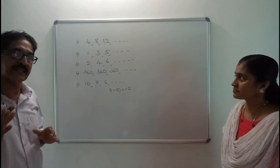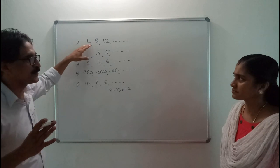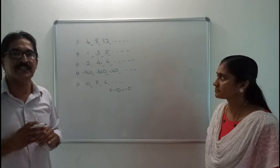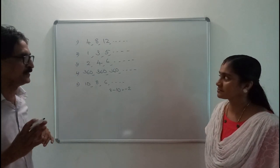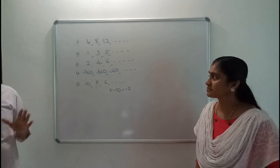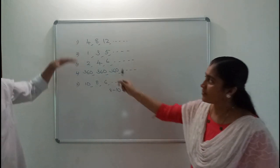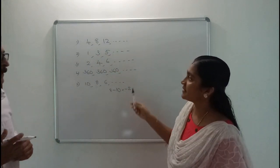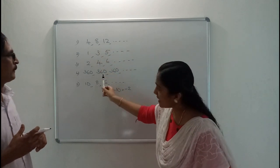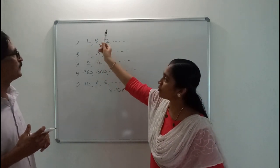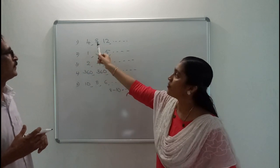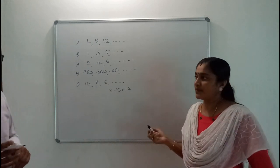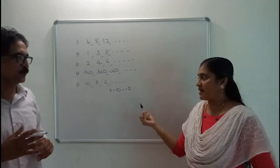If you subtract the first term from the second term, it will always be a constant number, and this constant number is called the common difference. So this constant number is called the common difference.